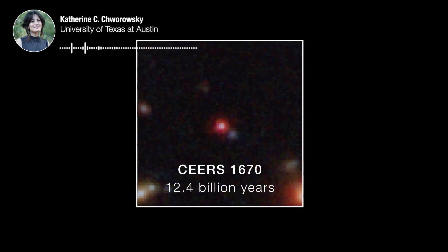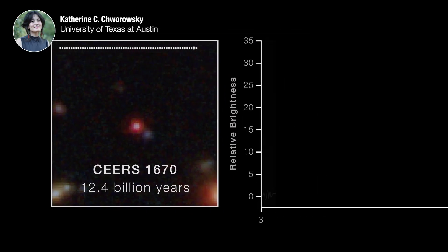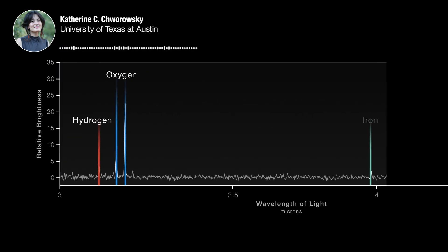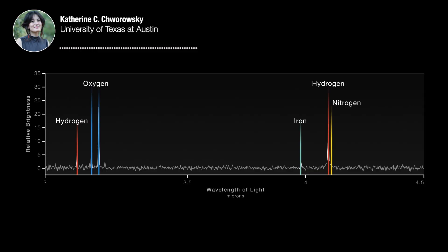And so one thing that happened with this Webb data is this flurry of scientists working on galaxies and scientists working on black holes coming together to try to understand what exactly we're seeing.